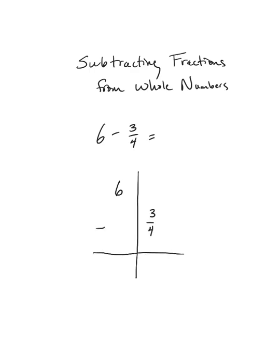Now that I have my problem set up, I'm going to treat it just like I would with whole number subtraction. I'm going to start on the right side and attempt to take three-fourths away. The only problem is that right above the three-fourths I have nothing to take it away from. So just like with whole number subtraction, I'm going to have to do some regrouping.